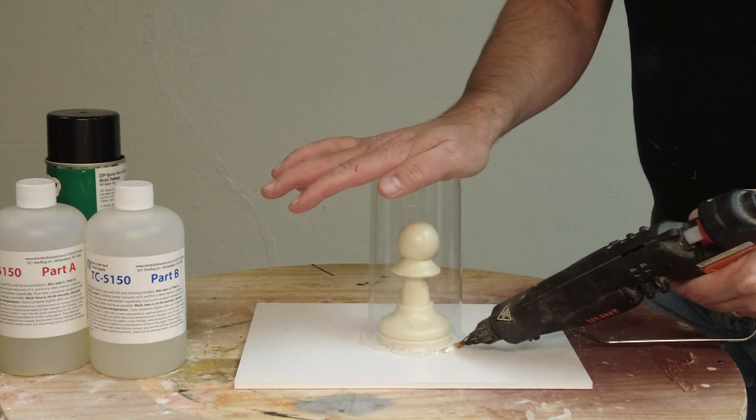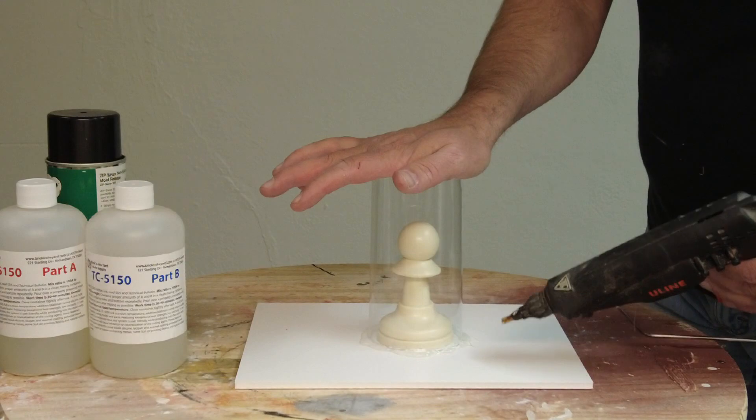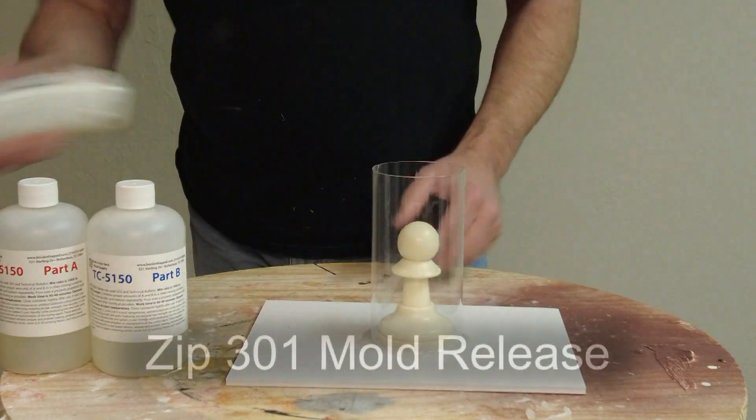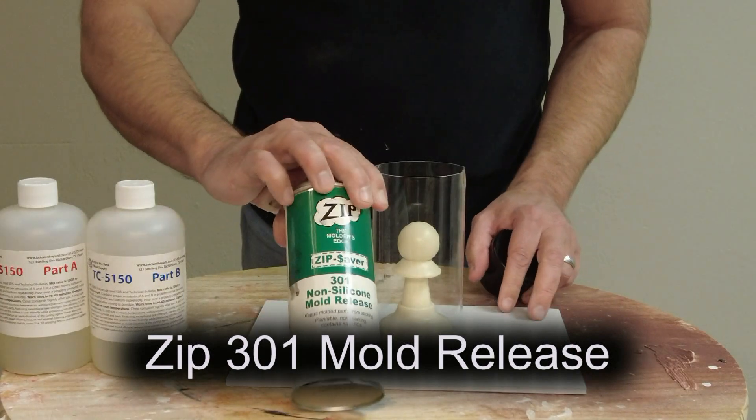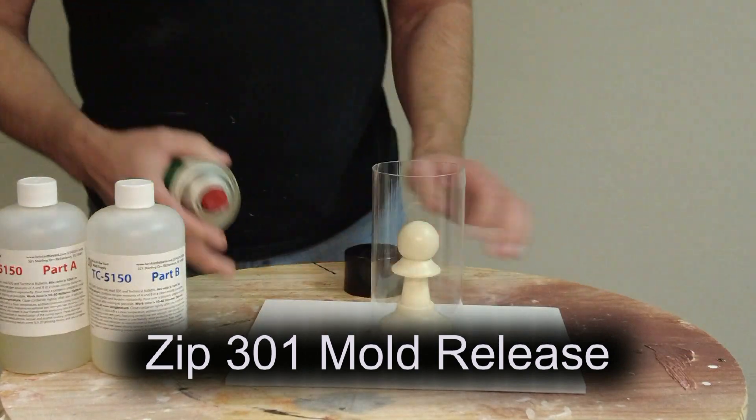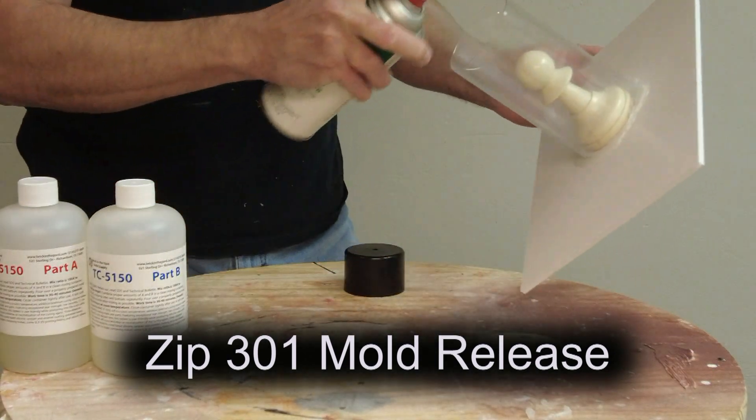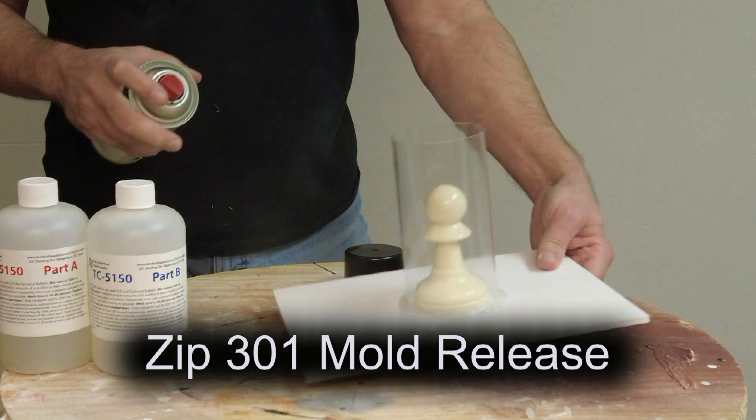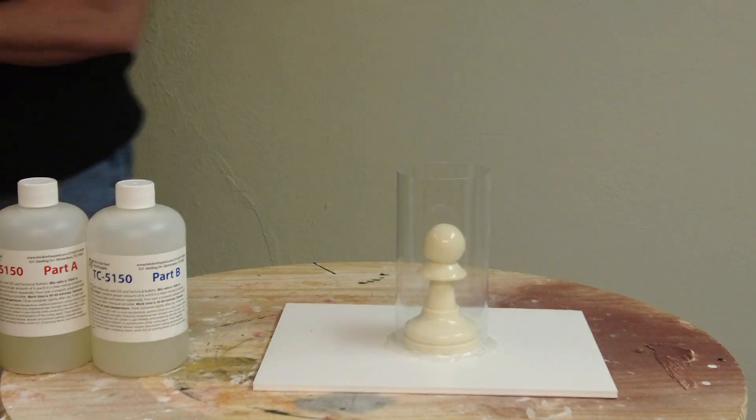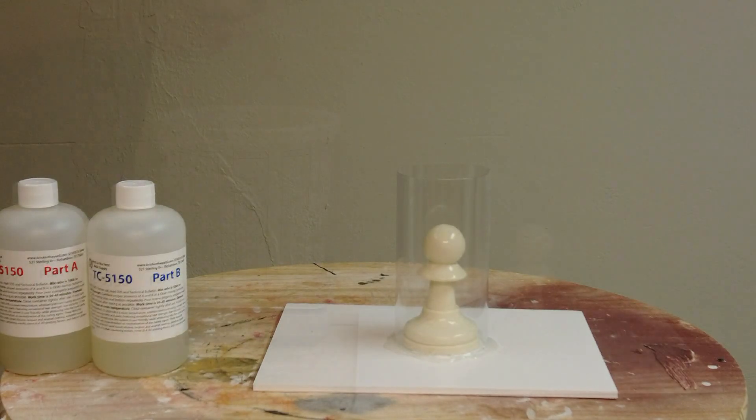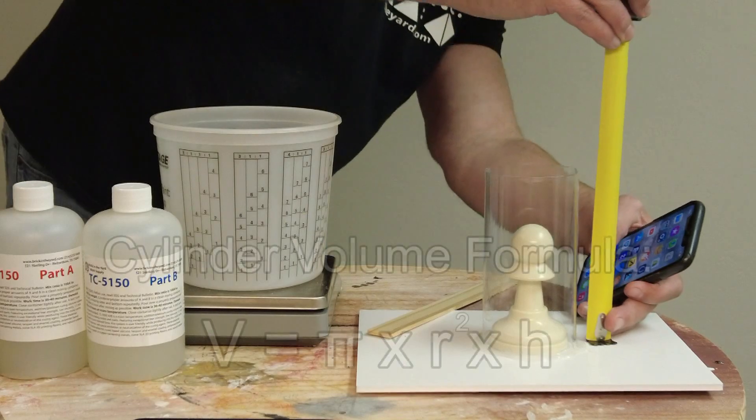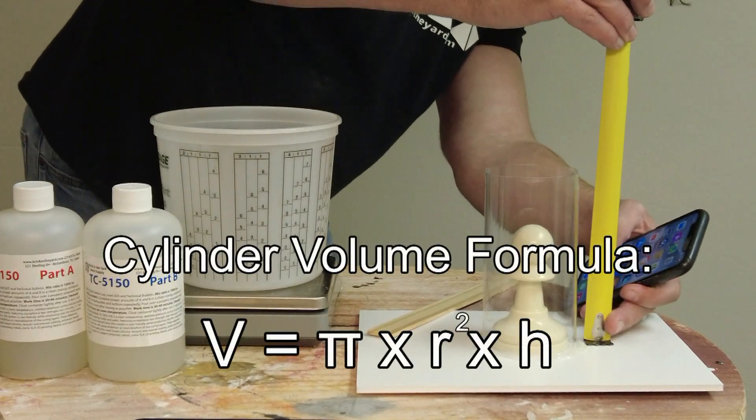Now we're going to secure this with some hot glue and use one of our mold tubes. A quick word about hot glue - the best hot glue I've found is actually just the generic hot glue from Hobby Lobby. We're now going to release our mold tube and our pattern using some of the Zip 301 mold release. Real important, this mold release does not contain silicone oil. Silicone oil can either contaminate the mold or cause the silicone to bond to the pattern, which is of course bad.